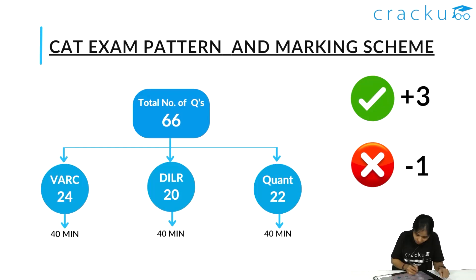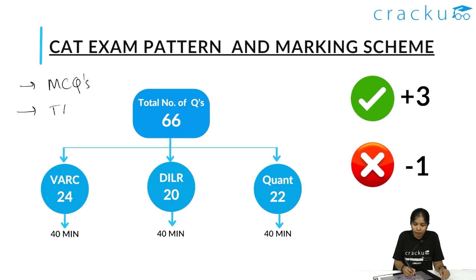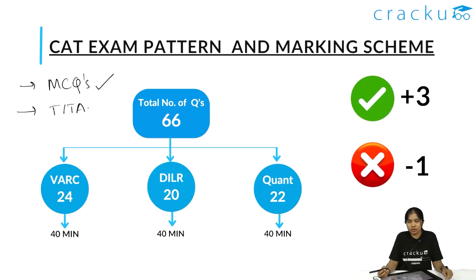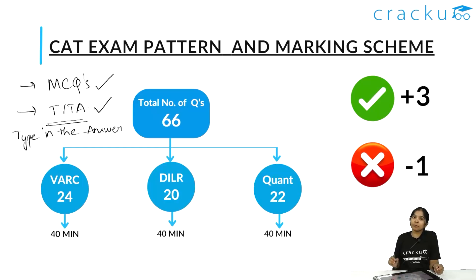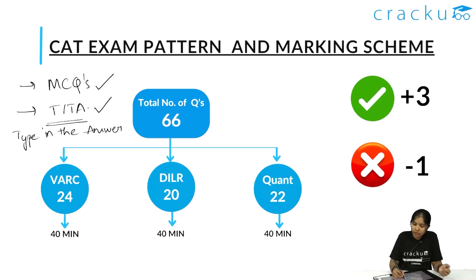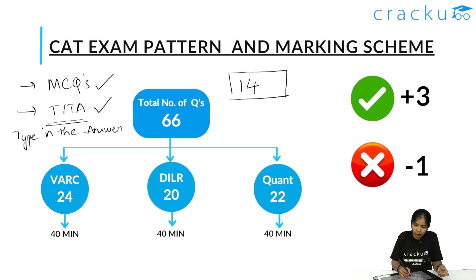Now coming to question types — you'll be tested in either MCQ format or TITA format. MCQs are multiple choice questions where you choose the correct answer from options given. TITA, or Type In The Answer questions, are questions where you manually type the answer without any options provided. For example, if the answer is 14, you'll be given a box and you type 14. No marks are deducted for wrong TITA answers.